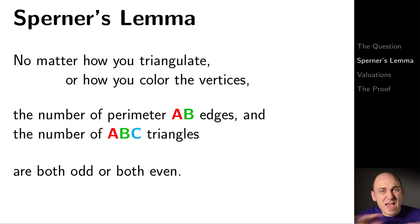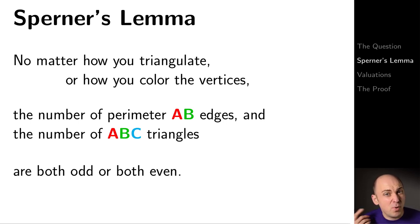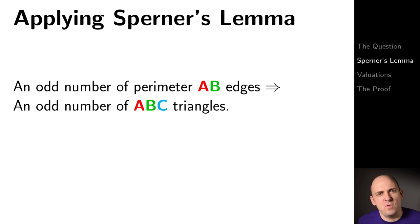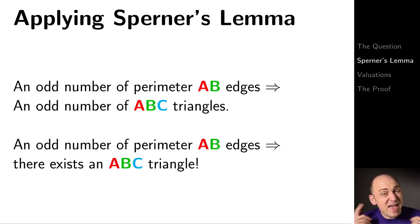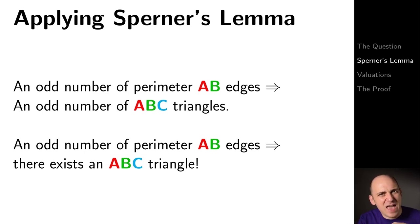To emphasize this: for any triangulation, for any coloring, the number of perimeter AB edges and the number of complete ABC triangles are congruent modulo 2 — they're both odd or both even. In particular, if we can prove that there's an odd number of AB edges on the perimeter, then there's an odd number of ABC complete triangles. Since 1 is odd, we can conclude there exists an ABC triangle. This is exactly how we're going to use Sperner's Lemma — to guarantee the existence of an ABC triangle.